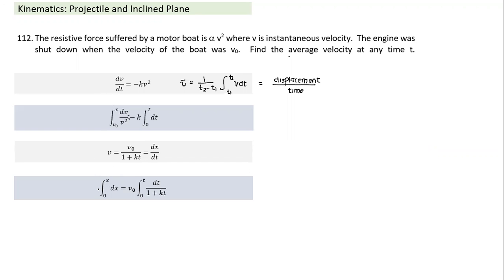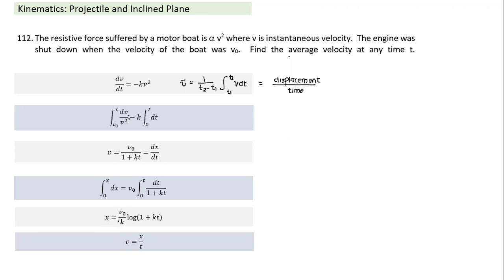Integrating again gives an expression for x, the displacement. The average velocity is this displacement divided by time. Depending on how the options are given, we can write the terms in different forms: 1/(kt) can be written as v-naught/p, and 1/(kt) also equals v-naught/v. The time t can be written as (1/k)(v-naught/v − 1). Rearrange to match the given options.